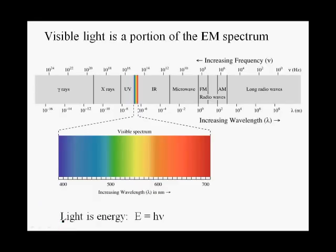We can't really discuss photosynthesis without discussing light as a form of energy. Visible light is a tiny portion of the electromagnetic spectrum, which goes all the way from gamma rays to long radio waves. We can characterize electromagnetic radiation in terms of both frequency and wavelength. The frequency and the wavelength are inversely related: the higher the frequency, the shorter the wavelength; the longer the wavelength, the smaller the frequency.